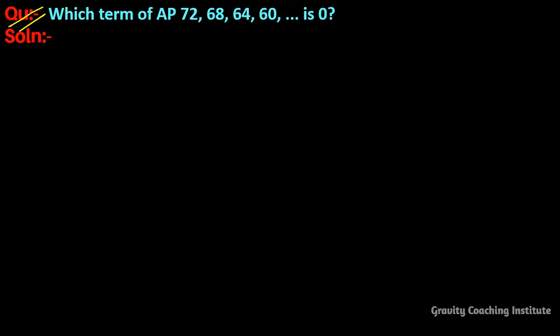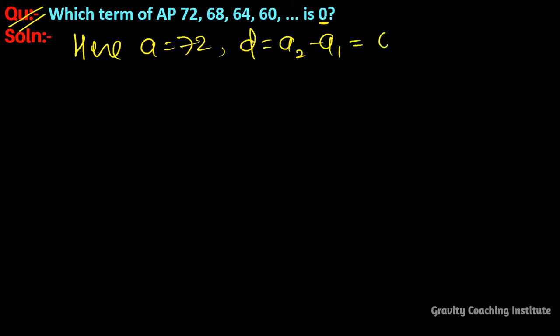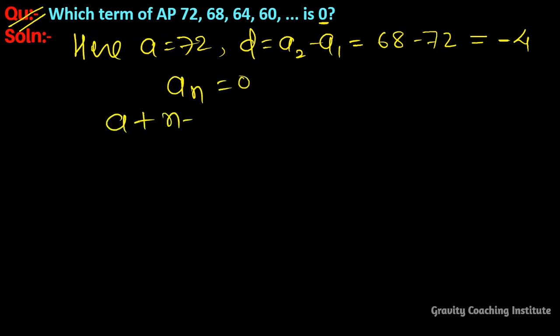Which term of the AP 72, 68, 64, 60, ... is zero? Here a is equal to 72, and d is equal to a₂ minus a₁, so 68 minus 72 is equal to minus 4. Setting aₙ equal to 0 and using the formula aₙ = a + (n-1)d equal to 0.